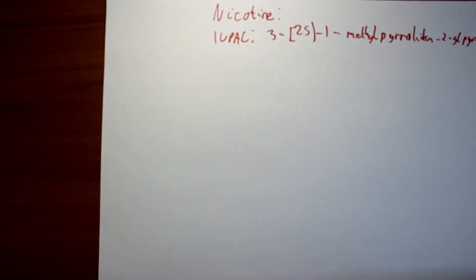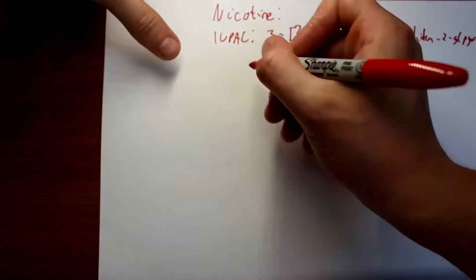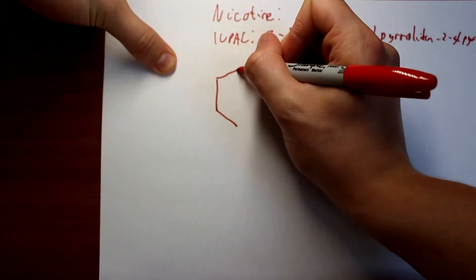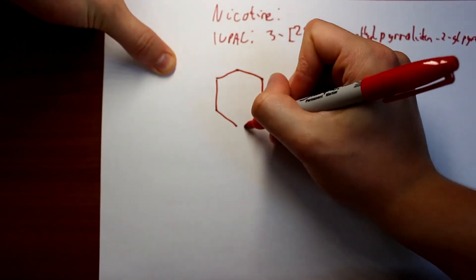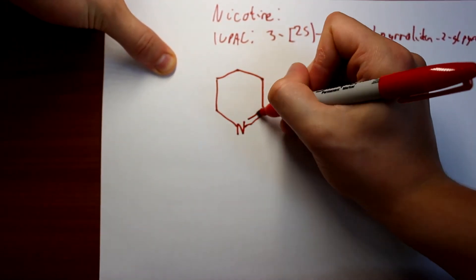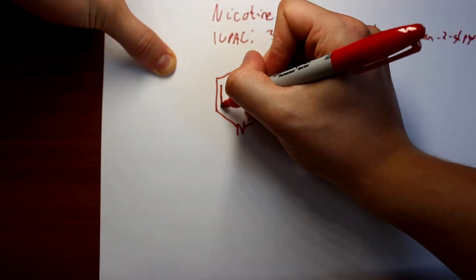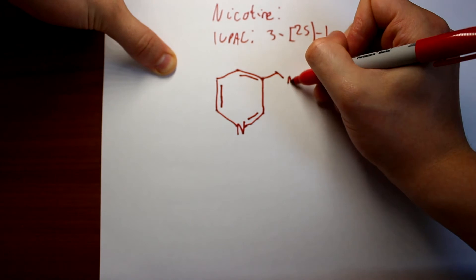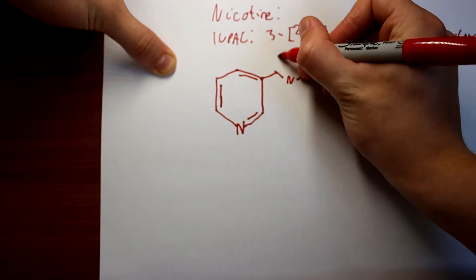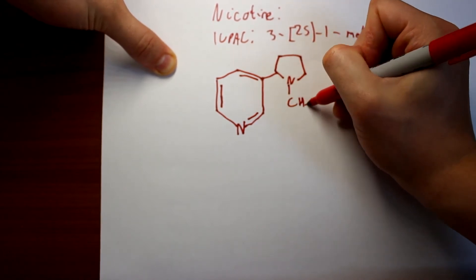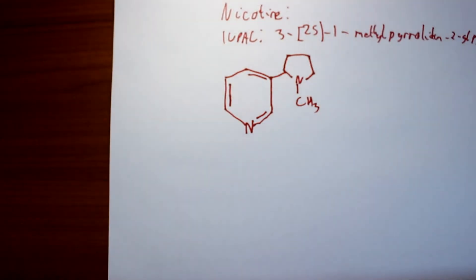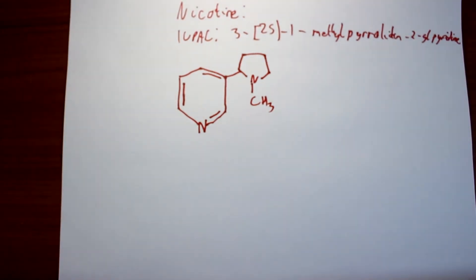Ever since TPD has come into effect in Europe, you can't buy nicotine as easily. You can't buy above 20mg per milliliter doses, although there are a few ways around this that will be covered in later videos.